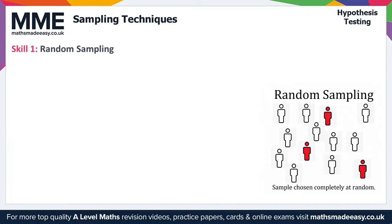In a random sample, every unit in the population is equally likely to be selected, and each selection is independent of every other selection. One way to do this is to assign every unit in the population a unique random number, then select the numbers at random and select the units that correspond to those numbers.